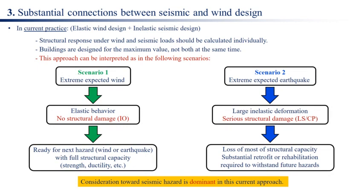This approach can be interpreted as two scenarios. Scenario 1: extreme expected wind causes elastic behavior, no structural damage (IO), and the building is ready for the next hazard — wind or earthquake — with full structural capacity including strength, ductility, etc.